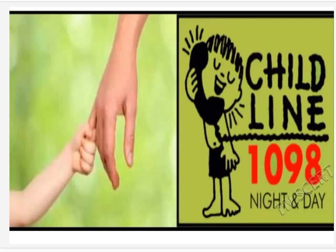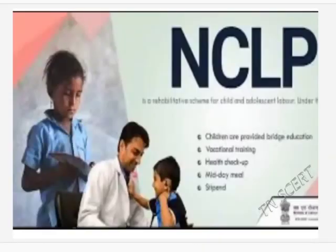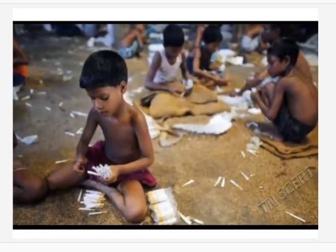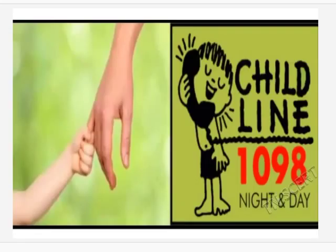Next, we learn about NCLP. The National Child Labor Projects have been set up to rehabilitate child labor. The children identified by the NCLP are to be withdrawn from dangerous occupations and put into special schools. A child's safety is very important. There are many laws to protect children. We have helplines and laws to support and protect children, but it is very important to teach children how to be safe and aware of what is happening around them.